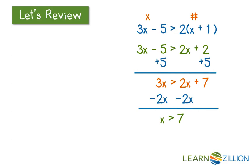Now we can check our work by picking a number, let's say 9, that satisfies our answer inequality. 9 is greater than 7. Then we substitute it into our original inequality to see if it's also true. 3 times 9 minus 5 is greater than 2 times the quantity 9 plus 1. So we know our answer is correct.